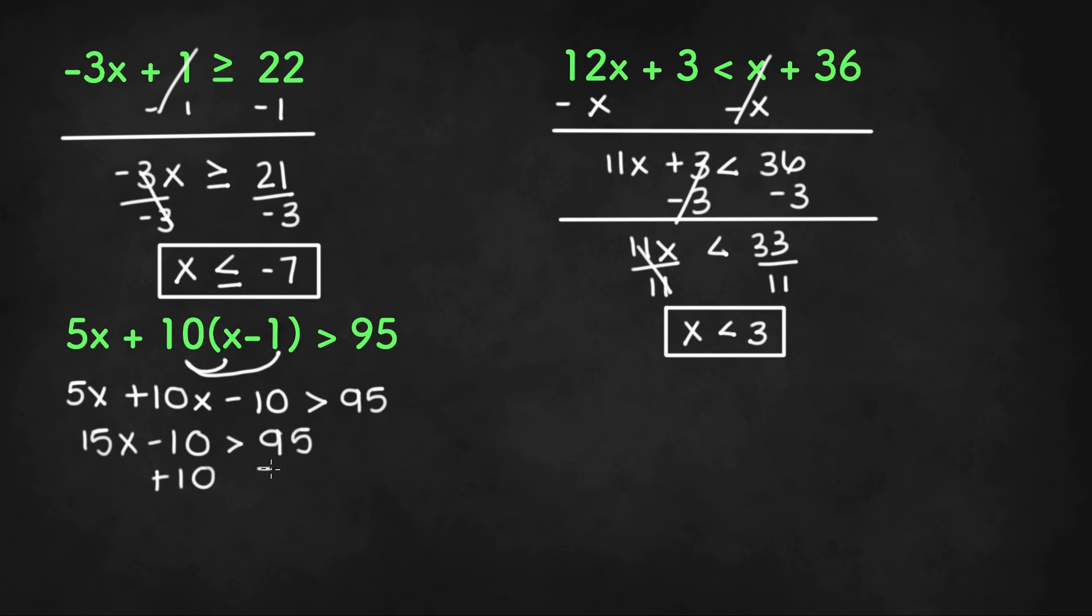Subtract 10 from both sides, or add 10 from both sides, to get 15x is greater than 95 plus 10 or 105.